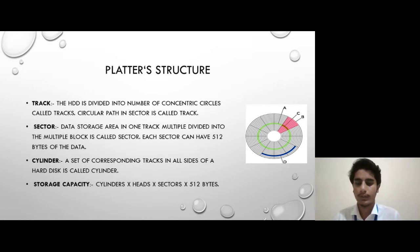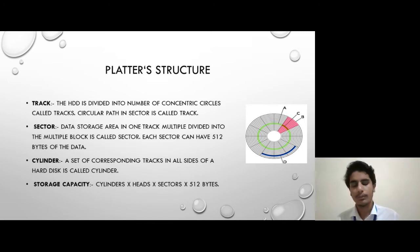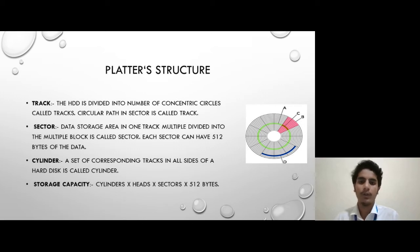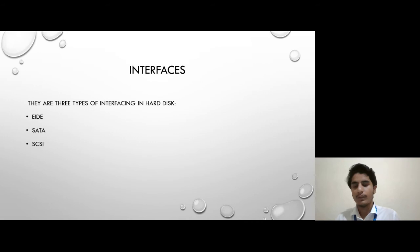Many tracks together form a cylinder. The storage capacity is calculated using a formula: the number of cylinders multiplied by the number of heads, multiplied by the number of sectors, multiplied by 512 bytes. 512 bytes is the standard general format for sector size.